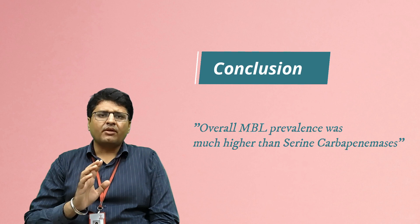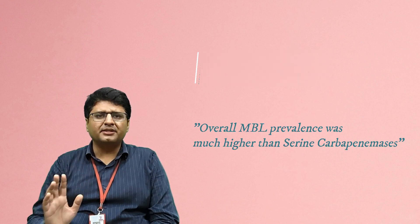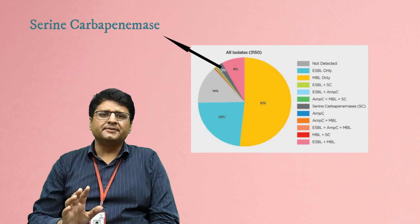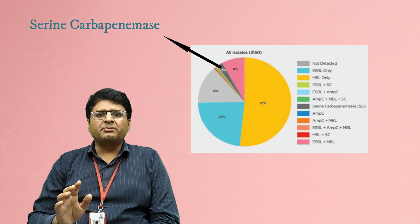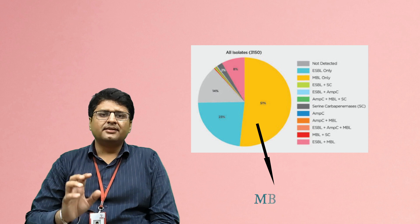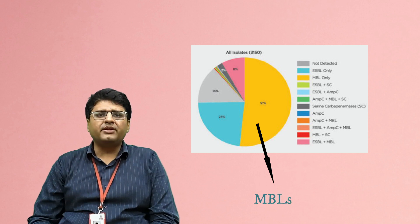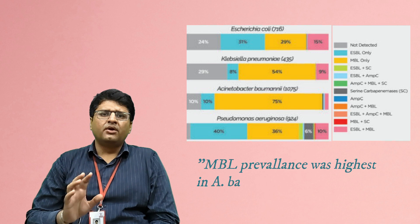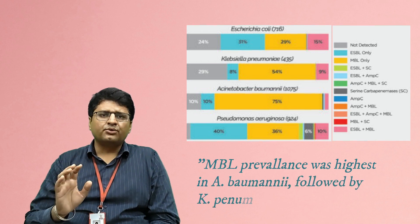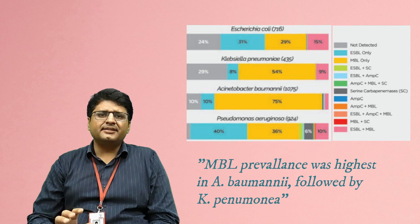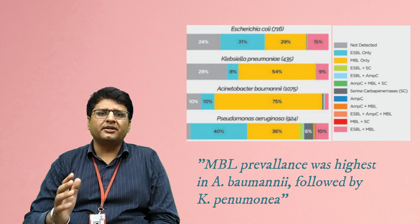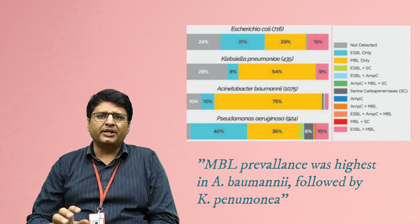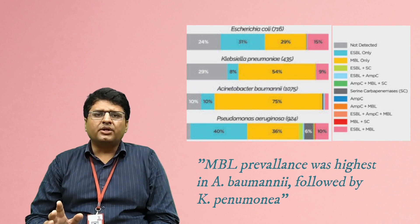The abstract reported that overall MBL prevalence was much higher than serine carbapenemases. As seen in the pie chart, serine carbapenemases like OXA and KPC account for only around 2%, whereas MBLs account for more than 50%. MBL prevalence was highest in Acinetobacter baumannii followed by Klebsiella pneumoniae, as shown in the graphs.